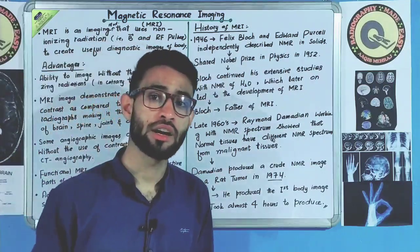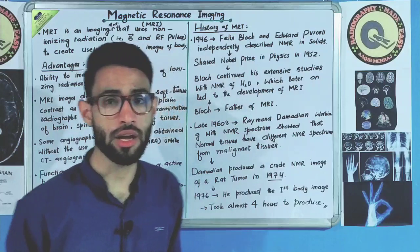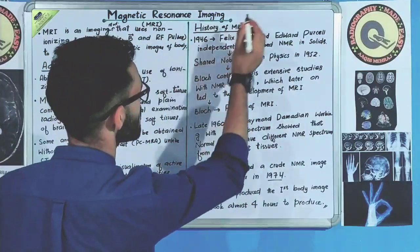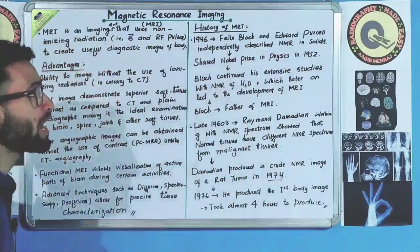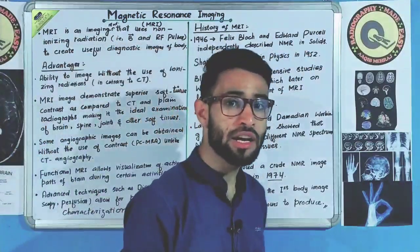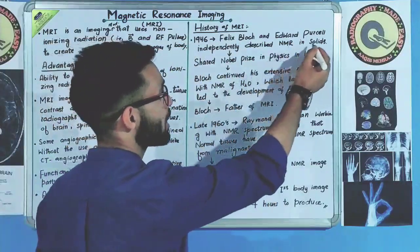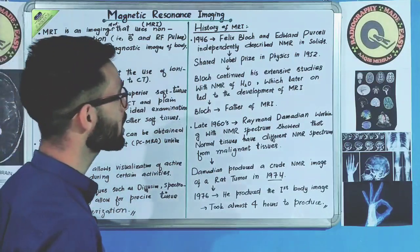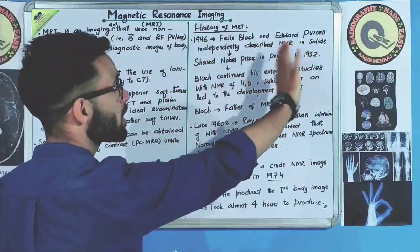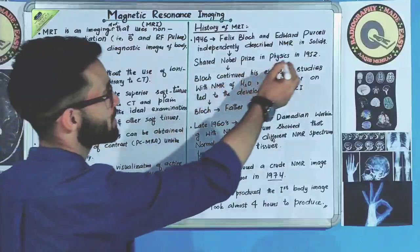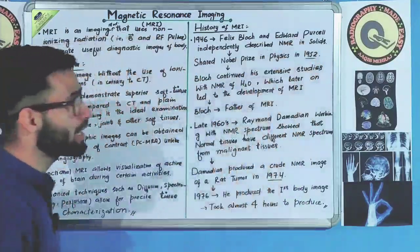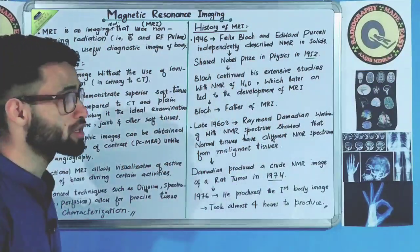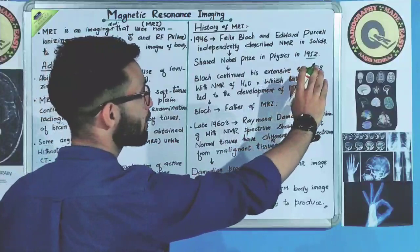Now let us see the history of MRI. First of all, in 1946, Felix Bloch and Edward Purcell independently described nuclear magnetic resonance in solids. For this work, they shared the Nobel Prize in Physics in 1952.